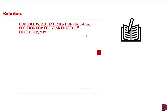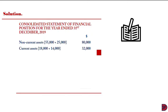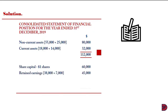When we come to the solution, the consolidated statement of financial position for the year ended 31 December 2019 is as follows. We pick the non-current assets and add them together. We ignore the investment of the parent in the subsidiary, which goes to cancel the shareholding of the subsidiary. For current assets, we add both columns giving $32,000, and the total assets come to $112,000. For share capital, we only record that of the parent. Current liabilities amount to $7,000, and when we sum them up, it equals the total asset column.